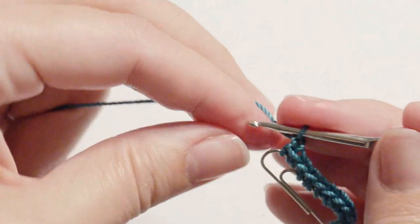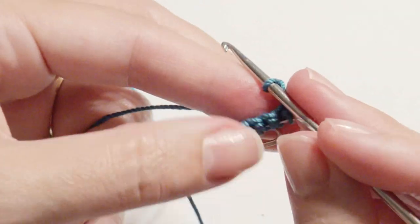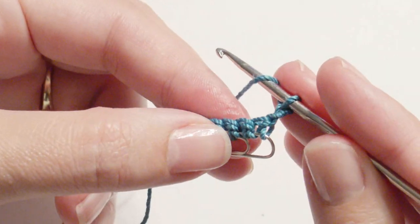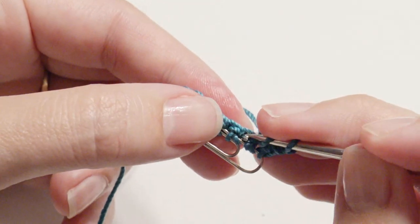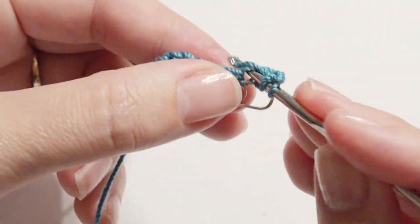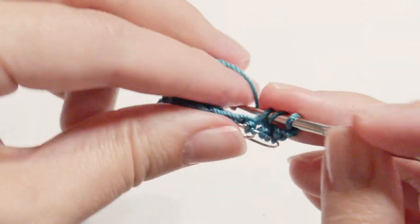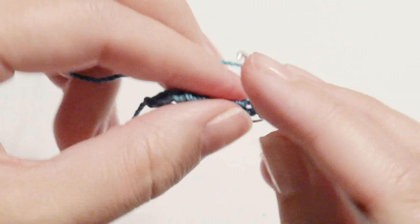Now chain two and turn. Work a double crochet in each stitch across. Yarn over, insert your hook, grab the yarn, yarn over, and pull through two loops, and then pull through two loops.